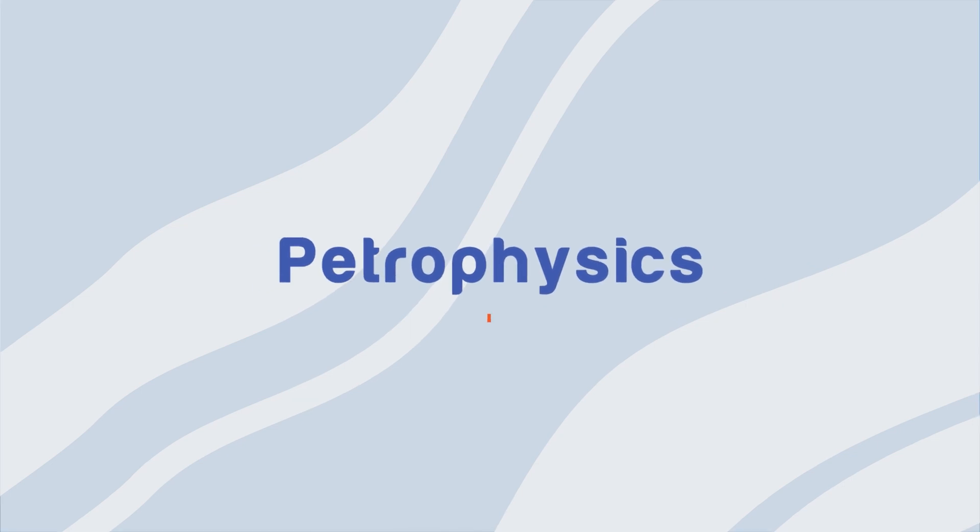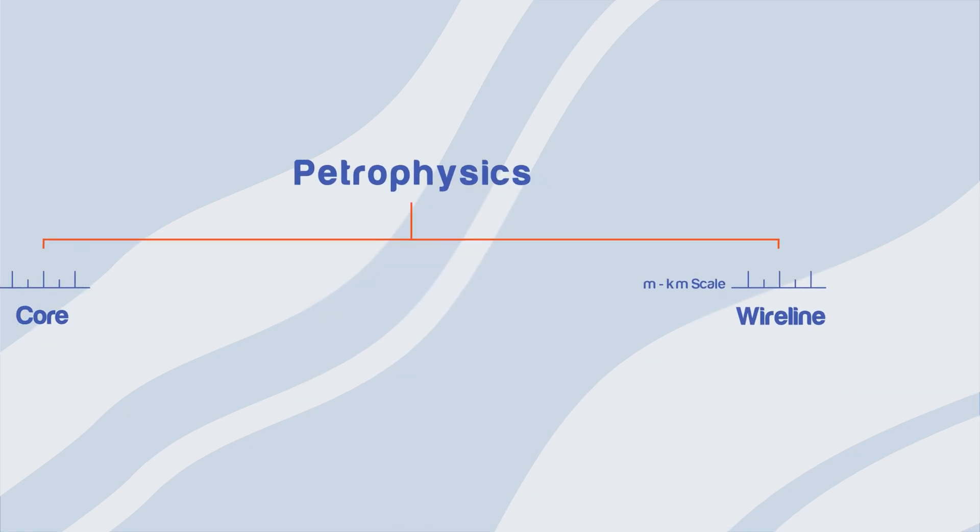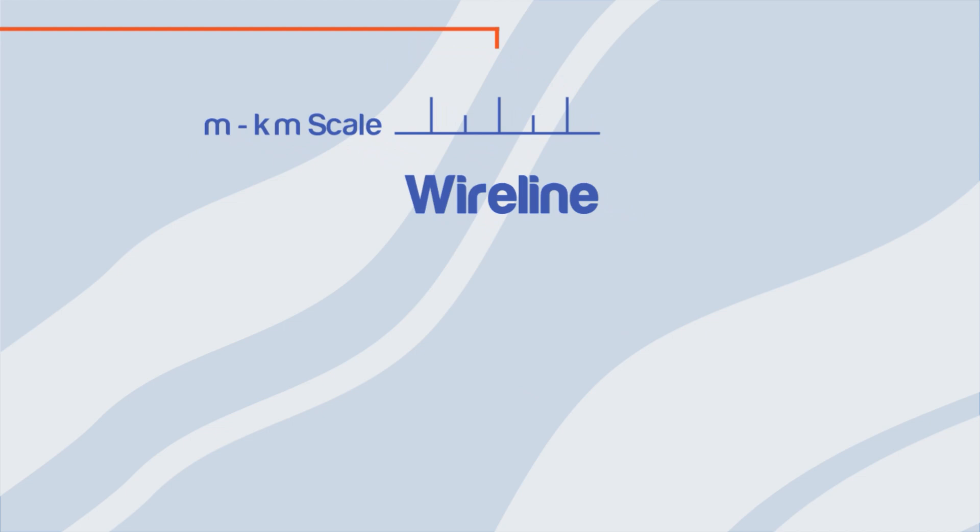Petrophysics can be divided into core and wireline. Wireline petrophysics is the acquisition and analysis of petrophysical properties as a function of depth.